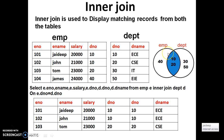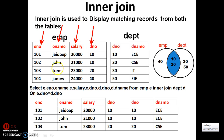So what is the output of inner join? Inner join retrieves the matching records from both the tables. The matching records in both tables are 10 and 20. For the syntax of inner join, I will give alias names to both tables — E for EMP and D for DEPT.